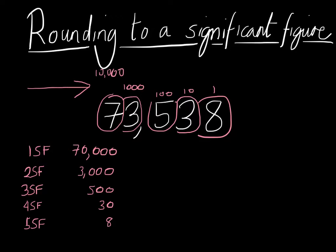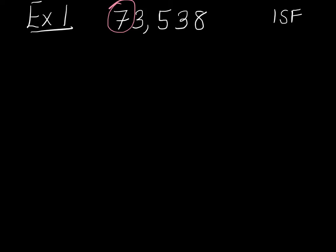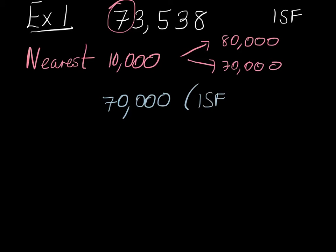So now we're going to use that knowledge to answer some questions. We're going to take the number 73,538 and round it to one significant figure. We look at the first significant figure — it's 7 — so this question is asking us to round to the nearest 10,000. Our options are clearly either 80,000 or 70,000. Clearly it's 70,000. So 70,000 is this rounded to one significant figure.